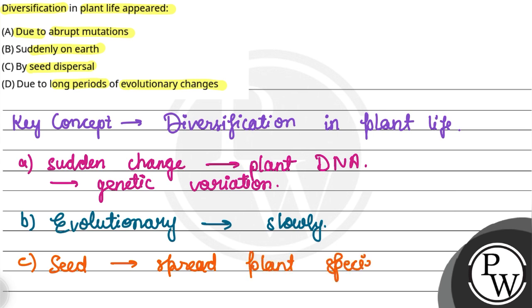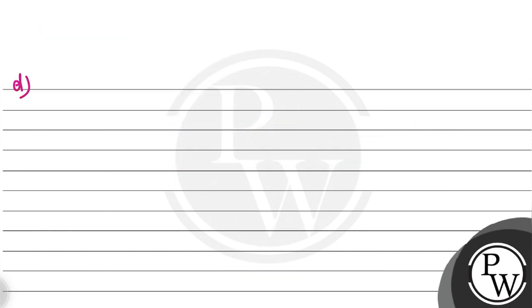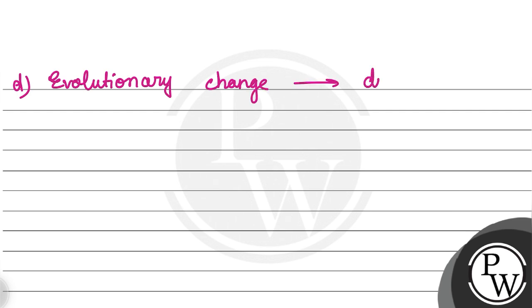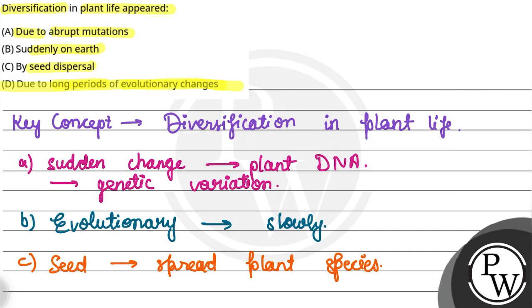Option D सबसे correct है — due to long period of evolutionary changes. जब long period of evolutionary changes होते हैं, तब जाके diversification हो पाता है। The right answer is D: due to long period of evolutionary changes. Hope you understood it well, best of luck!